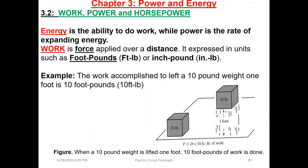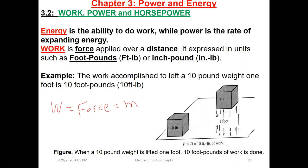Weight or force is equal to mass times gravity, or times G. So we said W or force equals mass times gravity G. That is a form of energy — mass is an energy, and weight or force is an energy. Now, if we try to lift a certain weight such as 10 pounds one foot above the ground, we call that action work. So what is work? Work is a force applied over a distance. It is expressed in units such as foot-pounds or inch-pounds.